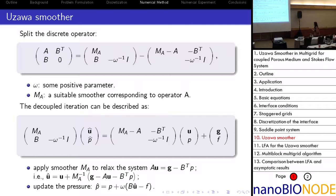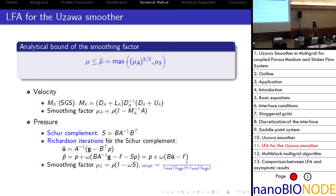Be careful with the relaxation parameter omega, as the performance of our smoother depends on it. We use local Fourier analysis (LFA) to help choose the optimal value of this parameter. LFA is the most powerful tool for quantitative analysis of multigrid. The Vanka smoother is studied in the LFA framework, and an analytical bound on the smoothing factor is obtained. The smoothing factor is bounded by mu_A and mu_S, where mu_A is the smoothing factor for velocity.